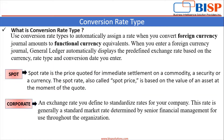Now we will discuss the predefined rate types provided by Oracle itself. The first rate type is spot rate. Spot rate is the price quoted for immediate settlement on a commodity, a security, or a currency. The spot rate, also called spot price, is based on the value of an asset at the moment of the quote.